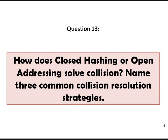Number 13. How does closed hashing or open addressing solve collision? Name three common collision resolution strategies. Closed hashing or open addressing solve collision by trying alternate cells until an empty cell is found. So it uses different probing sequences. The most common are linear probing, quadratic probing, and double hashing.